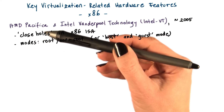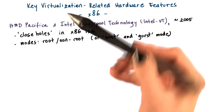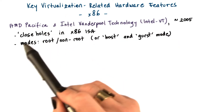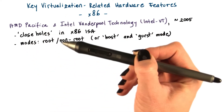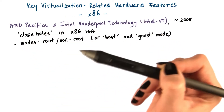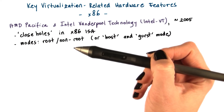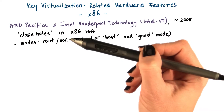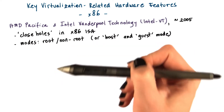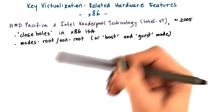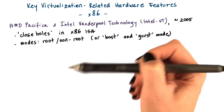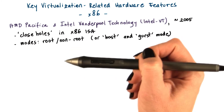With respect to x86, one of the first things that was fixed was to close the holes with respect to those 17 non-virtualizable instructions, so that they will cause a trap and pass control over in a privileged mode.